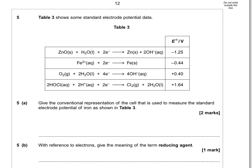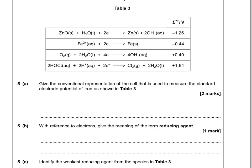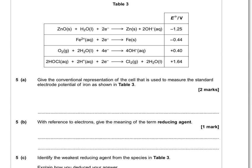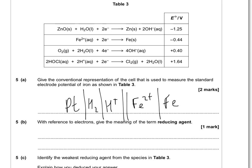Table 3 shows some standard electrode potential data. Give the conventional representation of the cell used to measure the standard electrode potential of iron as shown in table 3. You've got to attach the hydrogen electrode to the iron electrode. You have platinum connected to your hydrogen gas being pumped onto it, then your H⁺ solution. A salt bridge connects the H⁺ to your Fe²⁺ solution, and then iron on the outside acting as your electrode.